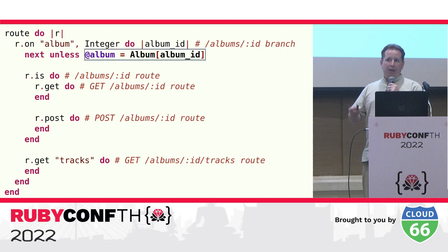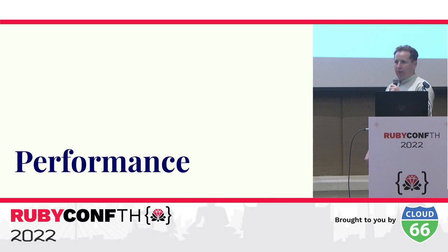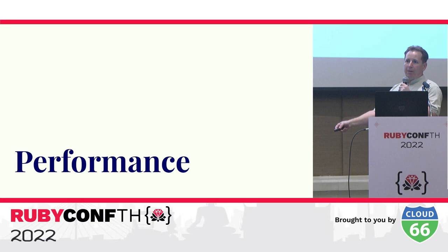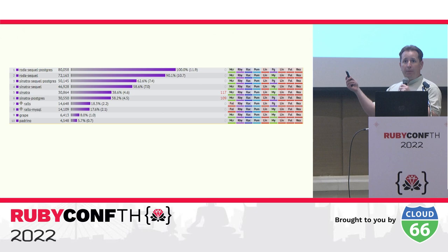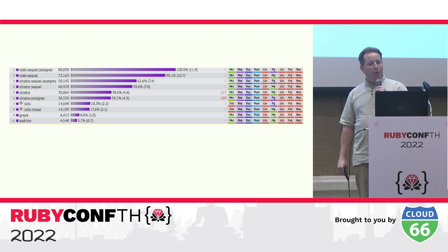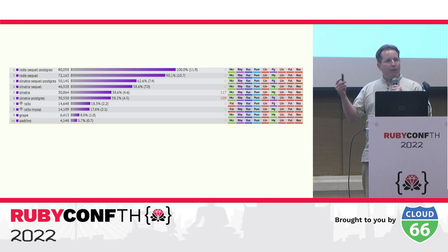Hopefully that gives you a flavor for how routing works in Roda. The most important part to remember is that Roda allows you to run arbitrary code at any point during the routing process. Regarding performance, TechEmpower has a fairly well-known set of web framework benchmarks. The results show that Roda combined with the Sequel database library is the fastest — about 60% faster than Sinatra with Sequel and over five times faster than Rails.